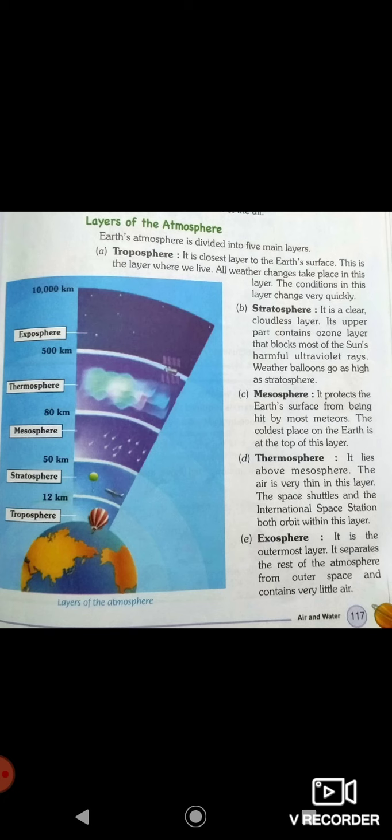Next is thermosphere. It lies above mesosphere. This is a very thick layer. Space shuttles and the International Space Station both orbit within this layer. Space shuttles and International Space Station, the orbit in which they revolve, is in this layer.